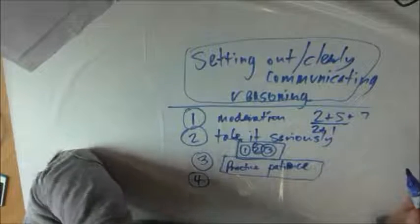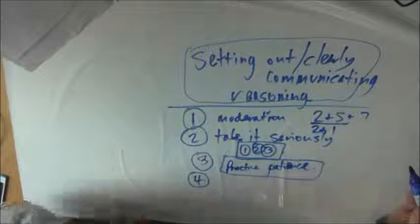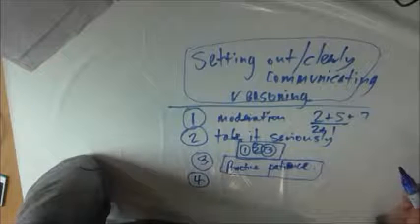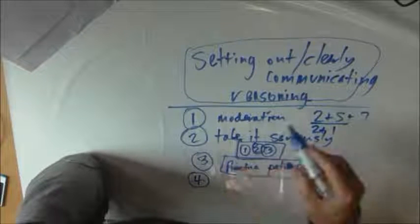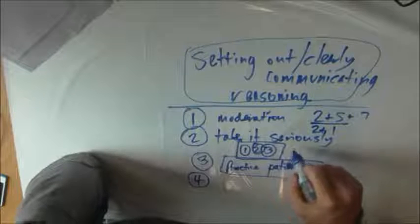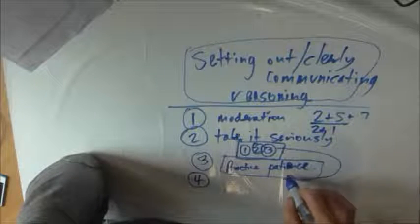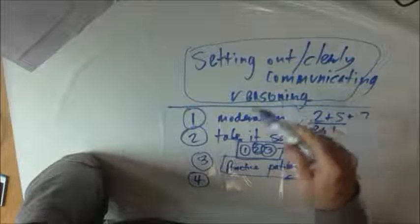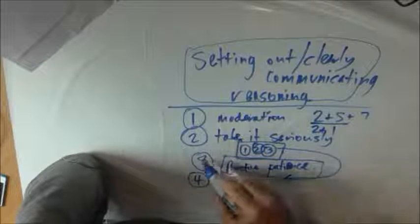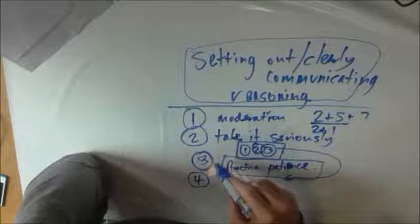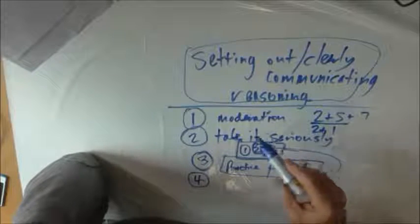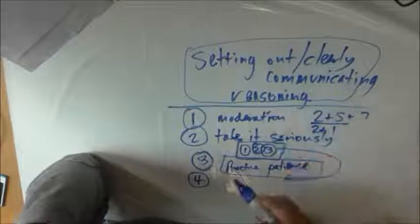My fourth recommendation would be to just think about particular mistakes you make on this. This is related to these comments that have ones, twos, or threes next to them. It might be that, in general, you're good at setting out, but there are particular things that you do wrong.